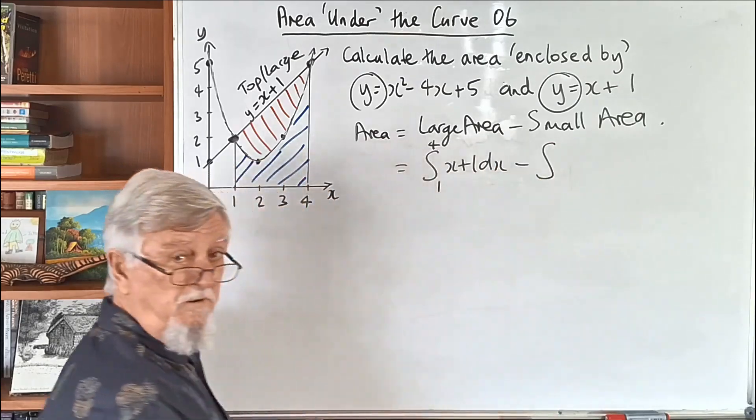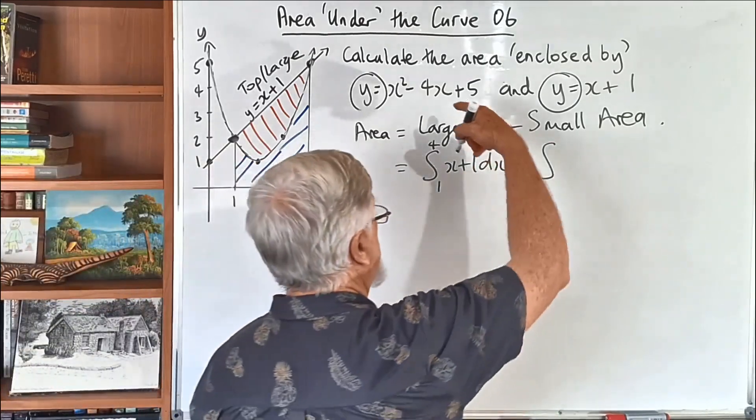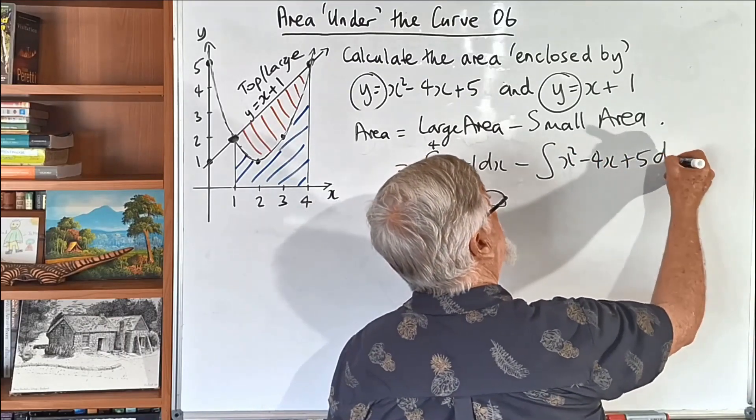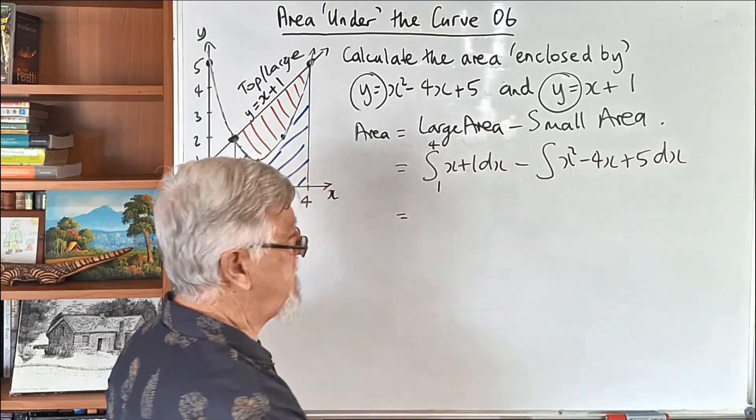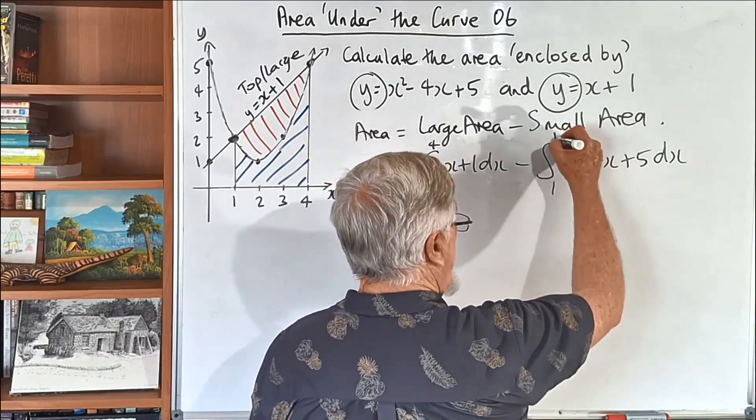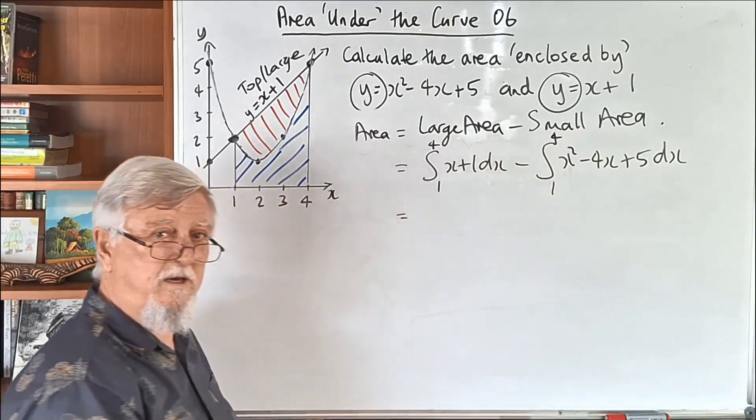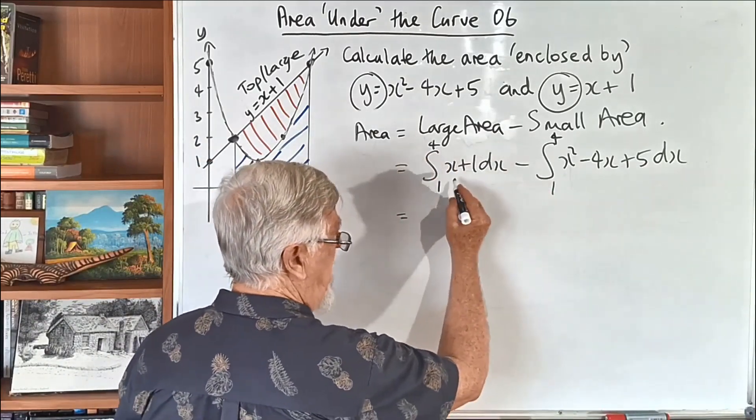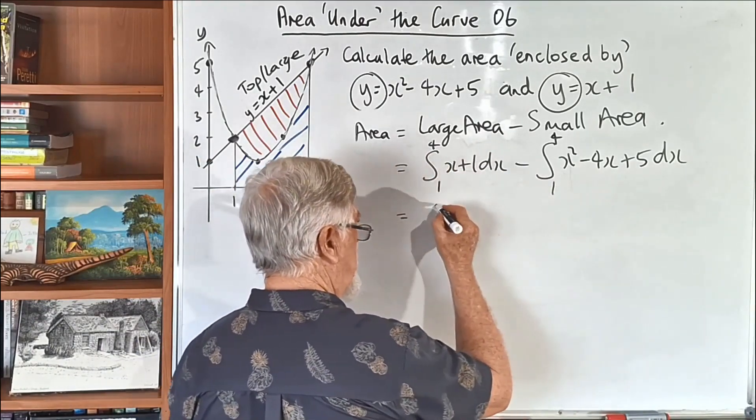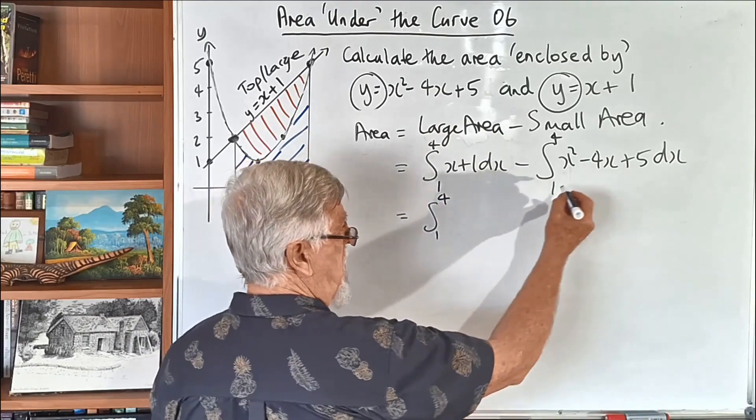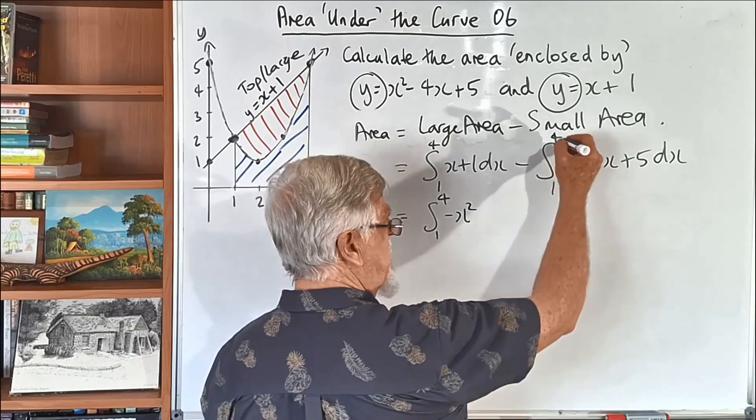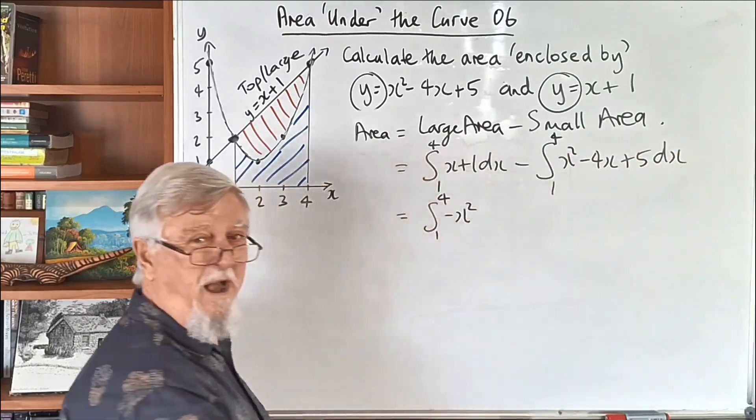and we minus the integral of the bottom, which is the parabola, x squared minus 4x plus 5. Now, algebraically, what if I just collect like terms? They're both going from 1 to 4, so I can just collect like terms here. So, what I'm going to have is you write the x squared first. So, it's the integral from 1 to 4, and the x squared is a minus x squared. So, watch, it's got a bracket. Remember, this thing here means there's a bracket around all of it.